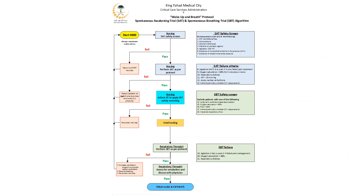This is the SAT and SPT protocol, which has four main parts: the SAT safety screen, then the decreasing and holding of sedation, then the SPT screen, and the SPT trial. If the patient passes all of these stages, then he will be possible to be extubated. If he fails in some stages, he will be re-evaluated the next day.